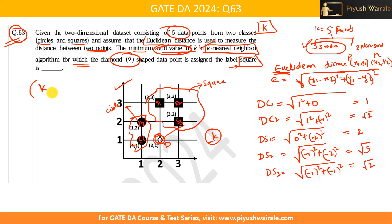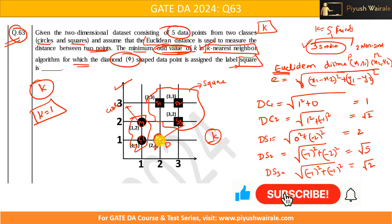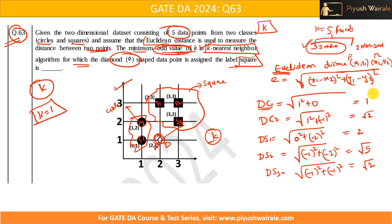Now we test different values of k. When k = 1, we assign the class of the nearest neighbor. The minimum distance is DC1 = 1, so D is assigned to circle. But we want the label square, so k = 1 is not the answer.